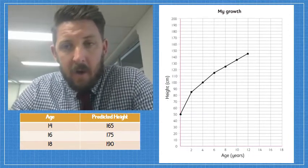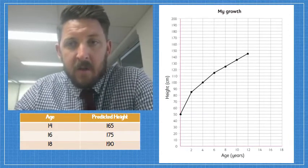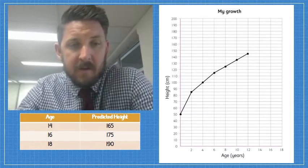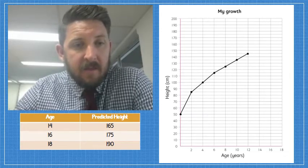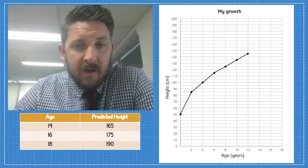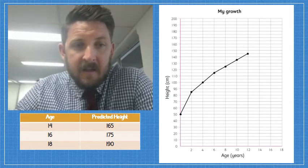What I'm going to do now is show you how I plot and how I continue on a graph. So here's my graph I had before, but I've been given three more measurements. The three measurements that I've been given are three projected heights, one for 14, one for 16, and one for 18 years.